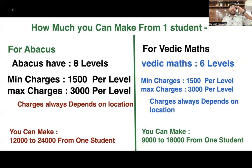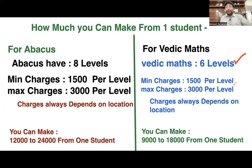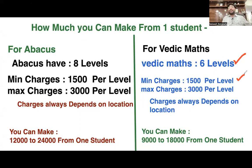If you take Vedic Math, it has six levels. For every level, you can charge a minimum of 1500 rupees per level — don't charge less than that. If you are charging less than 1500 rupees per level, you are cheating people and you are spoiling the market.